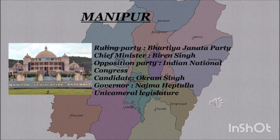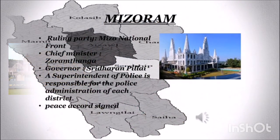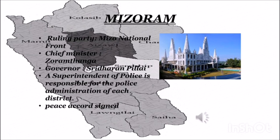Manipur: The party currently ruling in Manipur is BJP and the chief minister is N. Biren Singh. The opposition party is the Indian National Congress, with candidate Okram Singh, and the governor is Najma Heptullah. It's a unicameral legislature. Manipur has 16 administrative districts, two Lok Sabha constituencies, and the Manipur Legislative Assembly has 60 seats. Mizoram: Politics in Mizoram is dominated by two political fronts — the Mizo National Front and the Mizoram Pradesh Congress Committee (part of Indian National Congress). The chief minister of Mizoram is Zoramthanga and the governor is PS Sreedharan Pillai. Mizoram is divided into 11 districts and has one parliamentary seat.